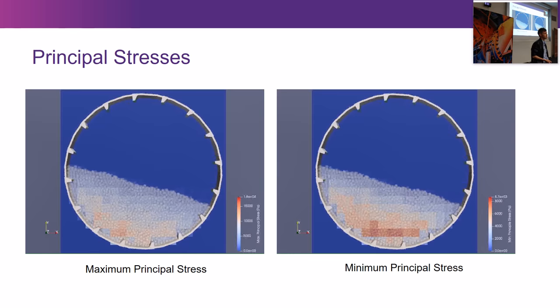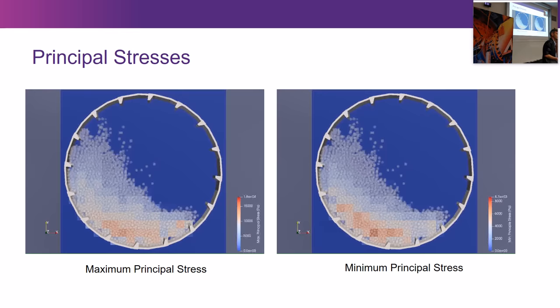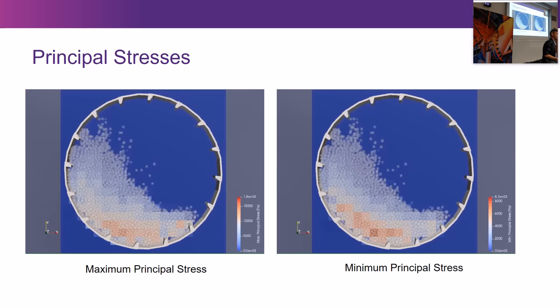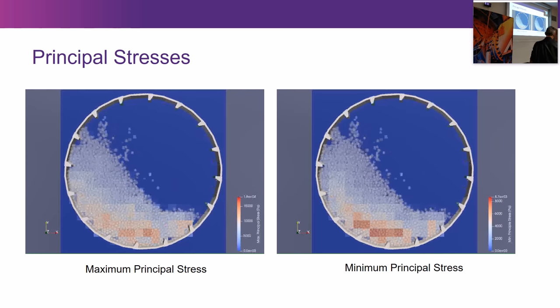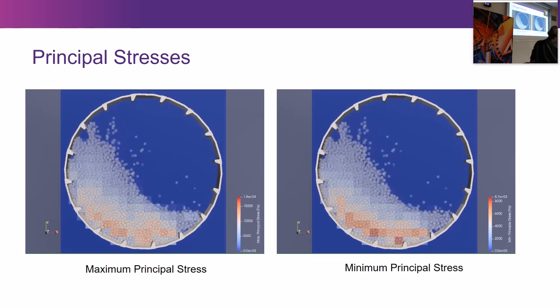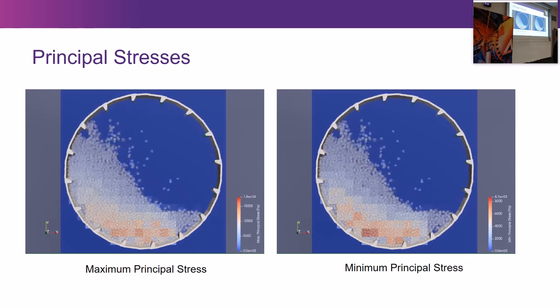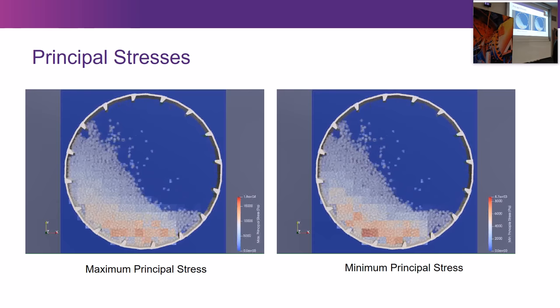We can look not just at overburden pressure at one time, but at the full stress tensor and principal stresses within the mill during tumbling. As the mill starts to turn, the charge gets pressed upwards and into the side rather than just down into the base. We find that the highest principal stress moves up a little and is about 18 kilopascals. The minimum principal stress — the least confining stress — is about 8 kilopascals. So particles are experiencing a force environment of about 8 to 20 kilopascals even while tumbling.